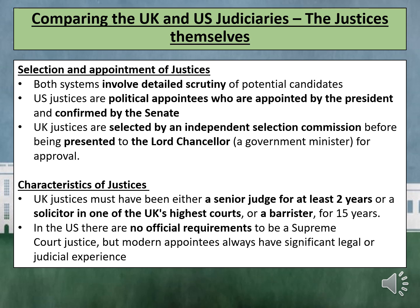In the US, there is no official requirement to be a Supreme Court justice, but modern appointees always have significant legal or judicial experience. Women and ethnic minorities are underrepresented on both courts. The US Supreme Court has a higher proportion of women but has never had a female chief justice, whereas the UK Supreme Court had a female president, Lady Hale, from 2017 to 2020. There are no justices from ethnic minorities on the UK court, but two on the US court. Overall, the US court is more diverse and more representative.